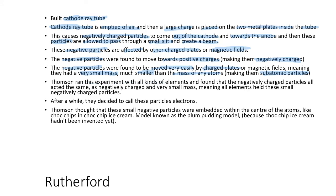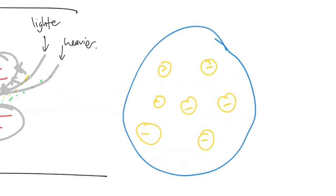He ran the experiment with all kinds of elements and found that they all acted the same and all had very small mass, meaning that all elements had these very small negatively charged particles. After a while, they decided to call them electrons, and they thought that these small negative particles were embedded in the center of the atom — like choc chips in a choc chip cookie. They called it the plum pudding model, because plum puddings were apparently popular back then.